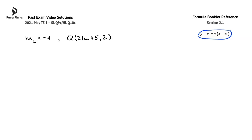In this equation, M is the gradient of the line, and x1 and y1 are the coordinates of a point that lies on the line, so here x1 is 2 ln 45 and y1 is 2.